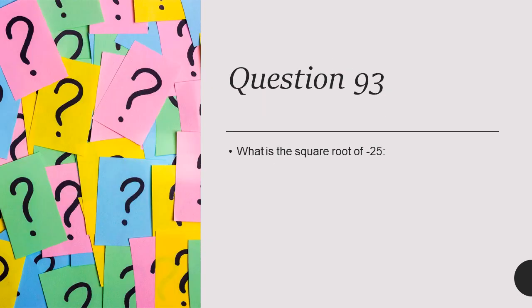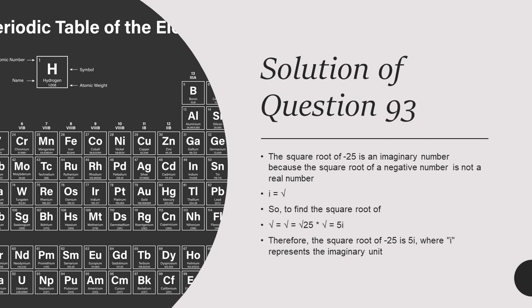Question 93: What is the square root of minus 25? None of the given options was correct because its answer is an imaginary number and there was no imaginary number in the options. Pause the video to see the solution.